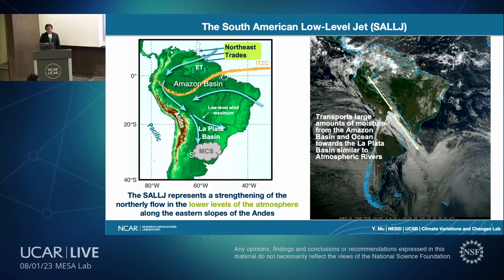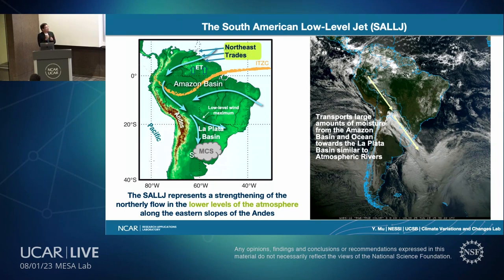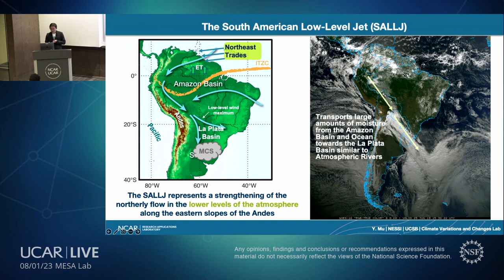The Amazon basin is the biggest tropical forest in the world. It provides a lot of moisture into the atmosphere through evapotranspiration, and this moisture can be transported by the low-level jet downwind towards the La Plata Basin — similar to an atmospheric river. The La Plata Basin is a favorable region for mesoscale convective systems, as the low-level jet transports moisture towards its exit region, causing moisture convergence, deep convection, and precipitation.